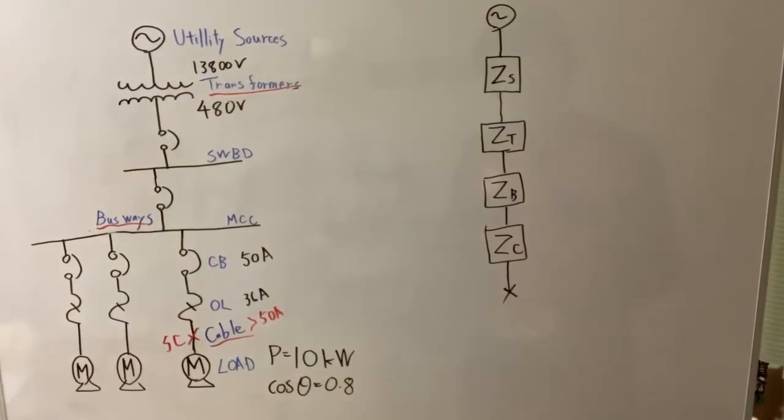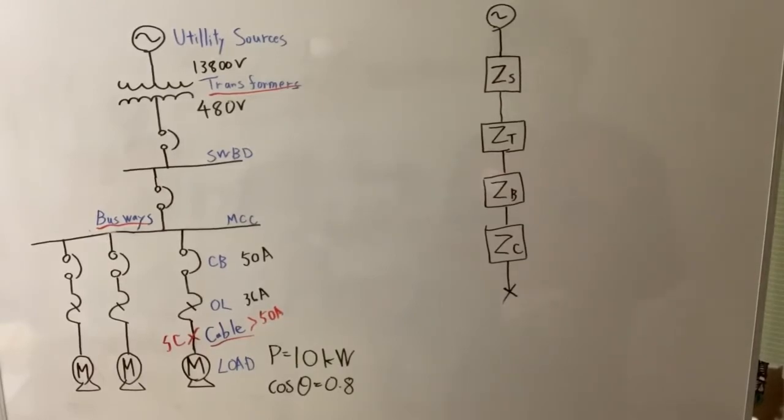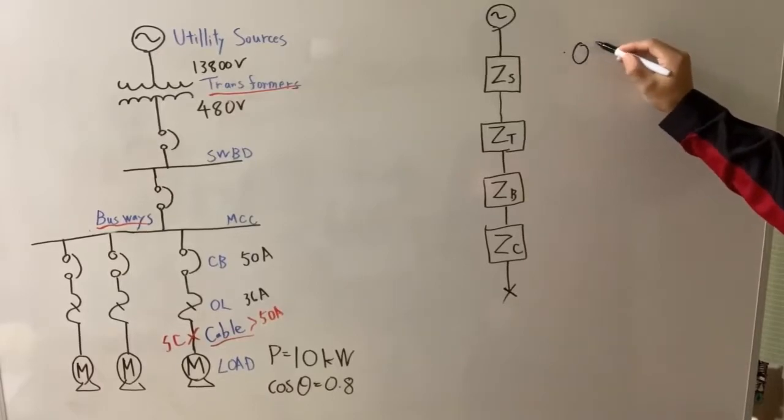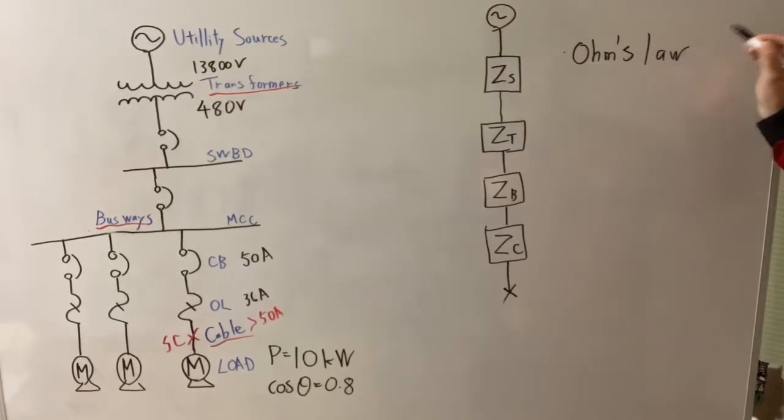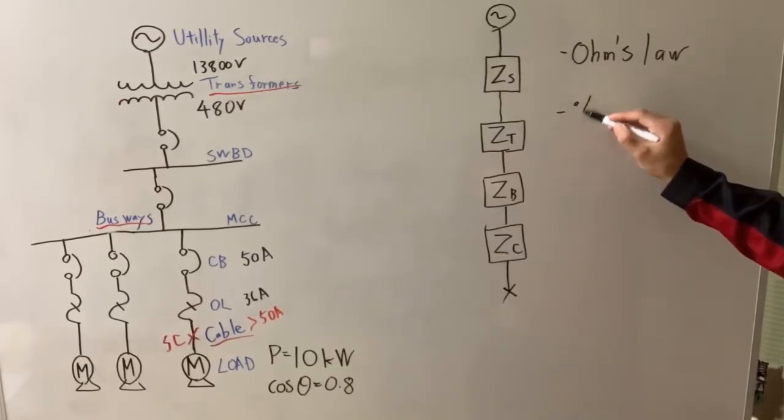In this schematic, we have two different ways to calculate the fault current. Especially three phase short circuit current. And the first way is ohm's law and second way is percent impedance method.